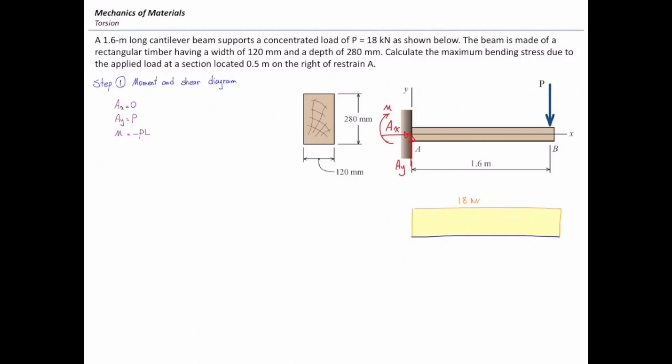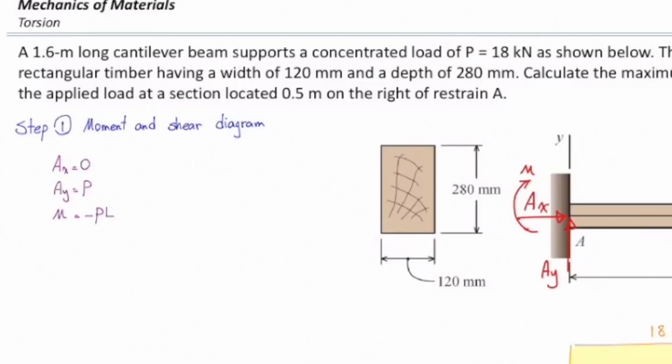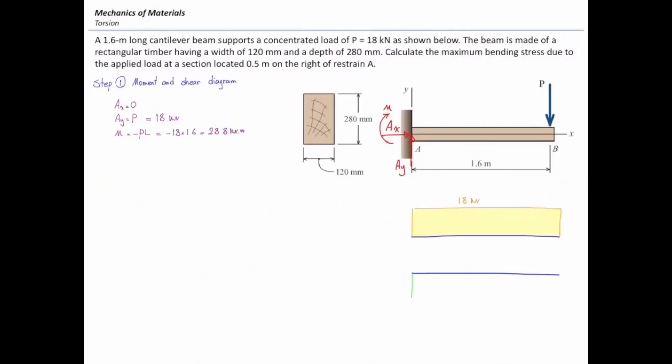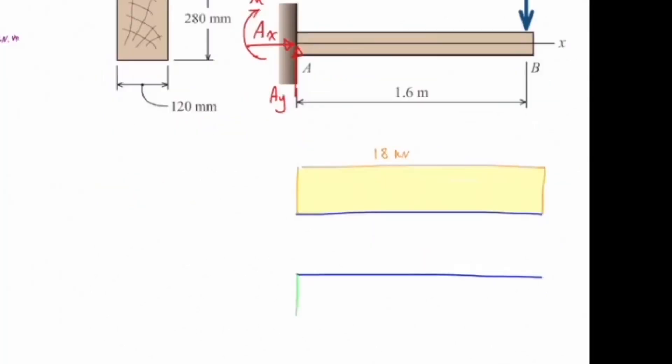Now we can determine moment diagram. Moment at the left side is equal to negative PL, which is equal to negative 18 times 1.6, which is equal to 28.8 kN·m. And because the shear diagram is constant, the moment would be linear and that goes to 0 at the right end. So the maximum moment would be negative 28.8 kN·m.